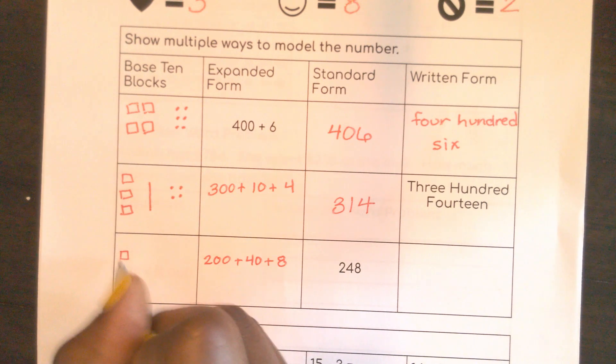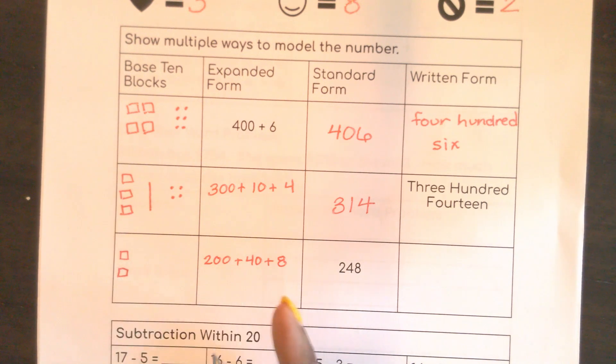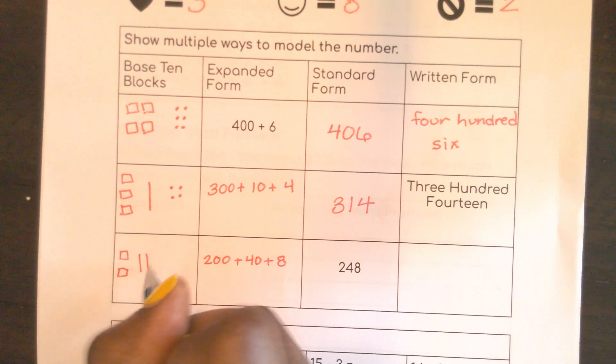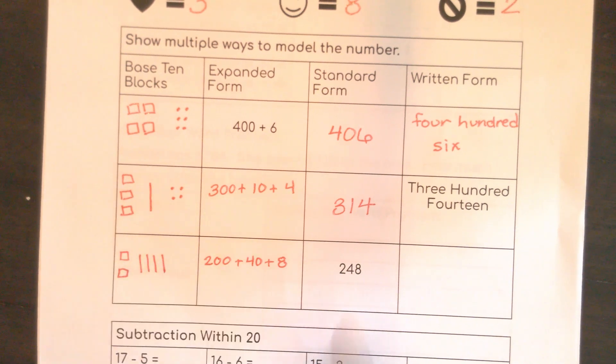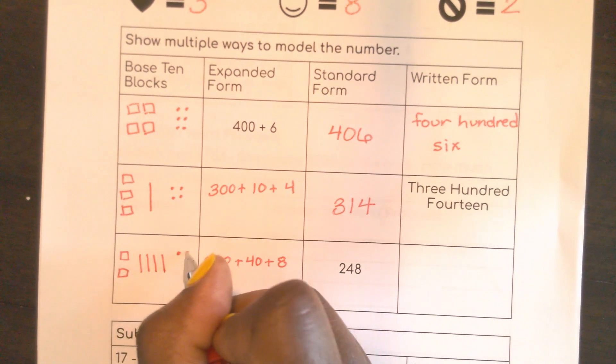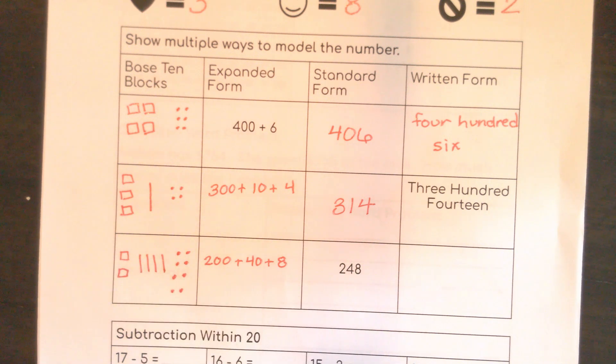Base 10 blocks, I would need 200s, 4 tens - 10, 20, 30, 40 - and 8 ones: 1, 2, 3, 4, 5, 6, 7, 8.